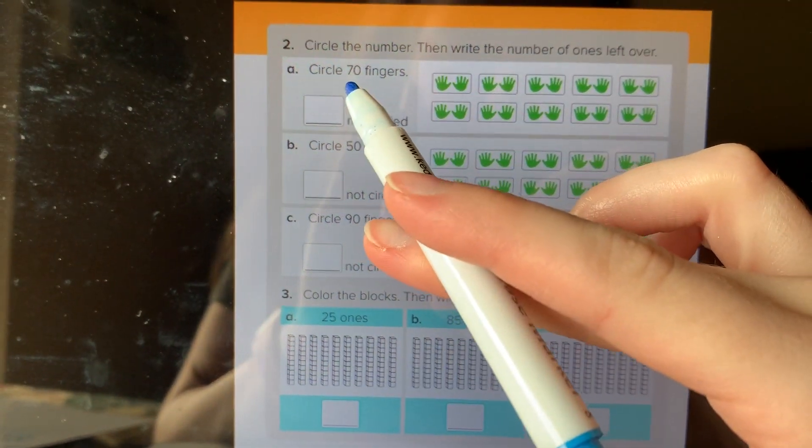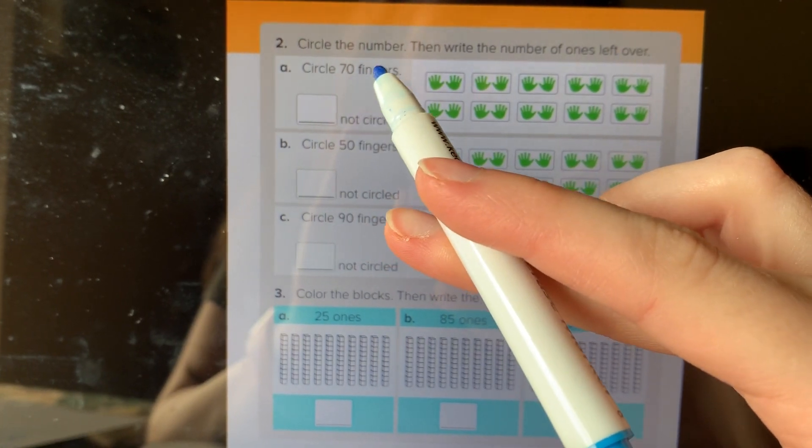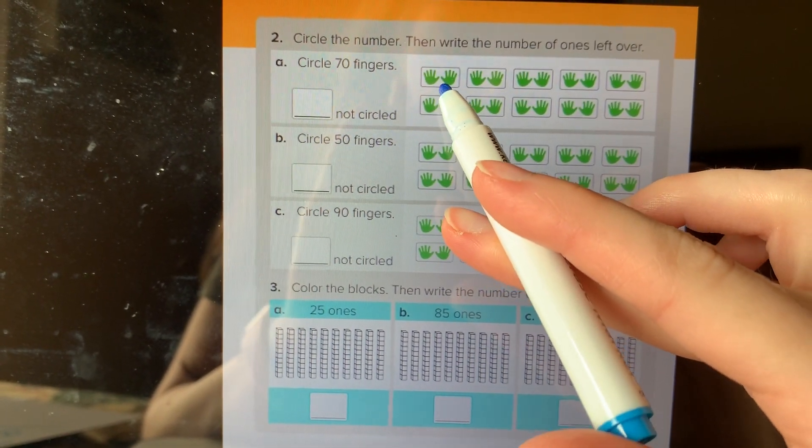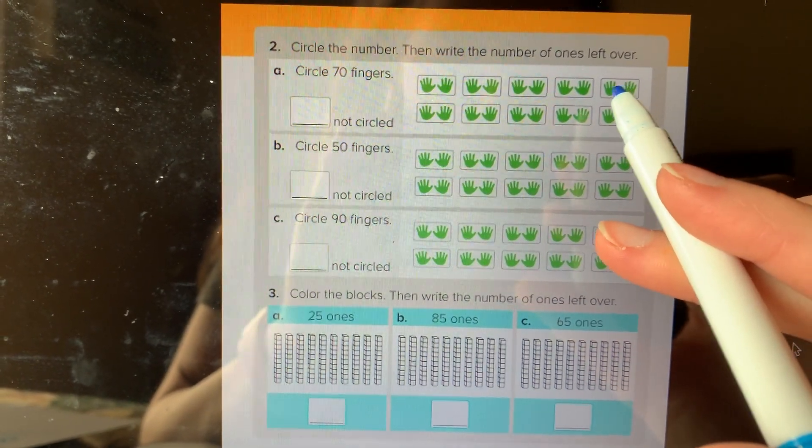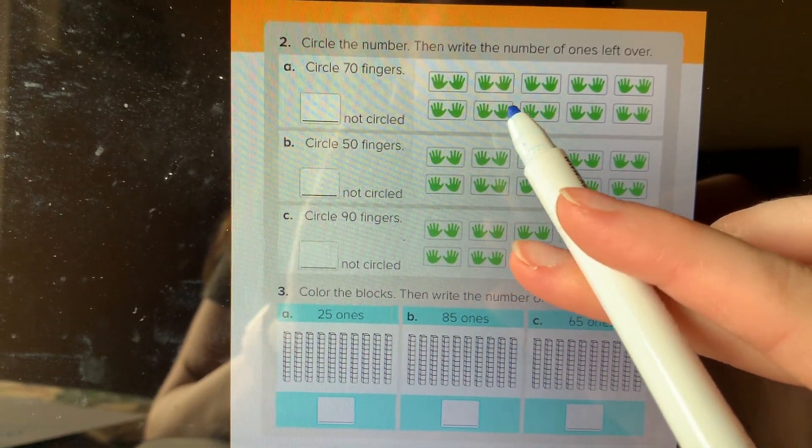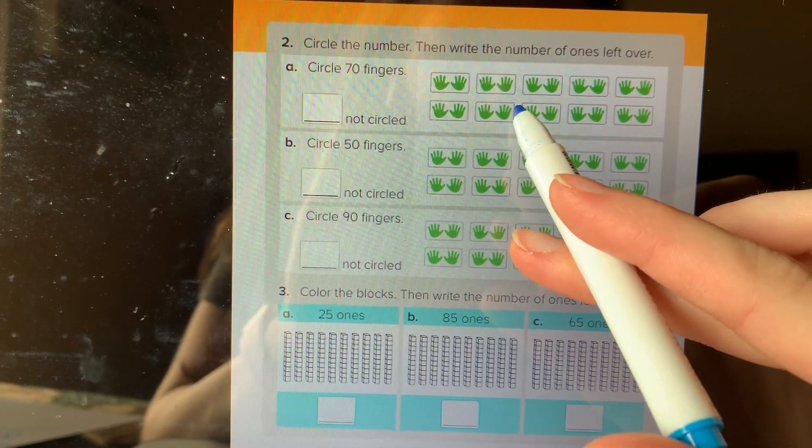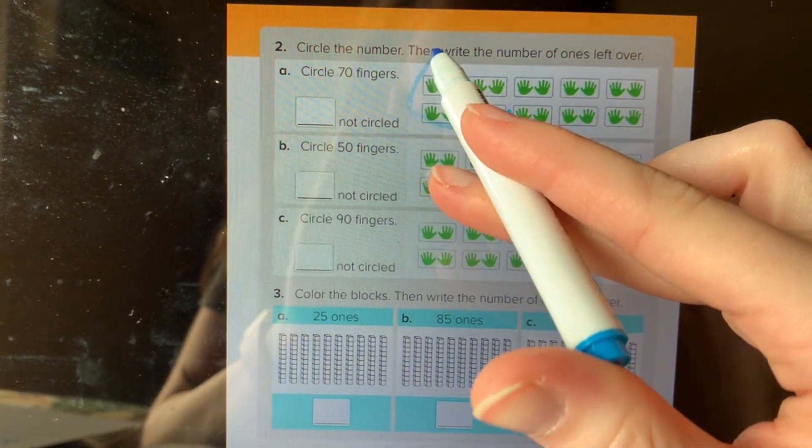So it says circle 70 fingers. So all I need to do is count by 10s: 10, 20, 30, 40, 50, 60, 70. So it said count to 70 and then circle that. So that's what I'm gonna do.